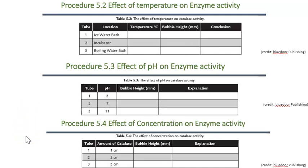The last procedure using enzyme catalase is procedure 5.4, where we look at the effect of concentration on catalase activity. One important concept is that enzymes are not used up in chemical reactions — they can be reused over and over. A small amount of enzyme can eventually convert a large amount of substrate into product. I like to think of this like pots and pans in your kitchen — you can reuse them over and over. Enzymes are very similar; just a little bit of enzyme can go a long way.